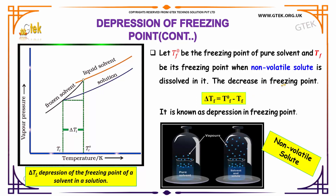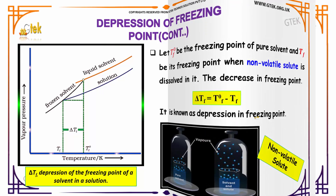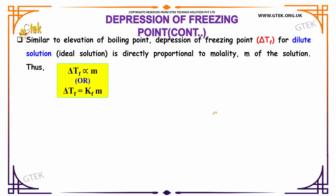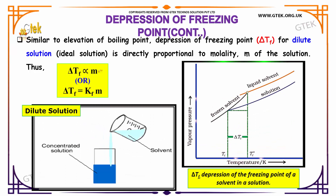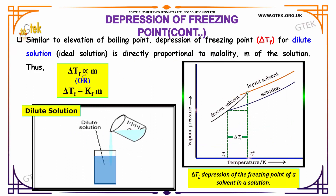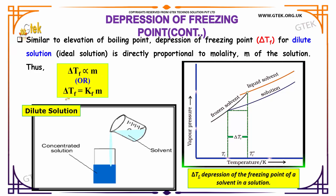There will be a decrease in freezing point: ΔTf = Tf° − Tf, which is known as depression in freezing point. Similar to the elevation of boiling point, depression of freezing point for a dilute solution is directly proportional to the molality m of the solution. So ΔTf is directly proportional to m, and ΔTf = Kf × m.